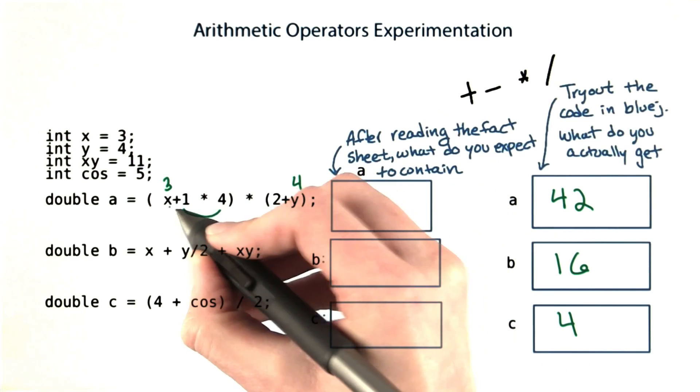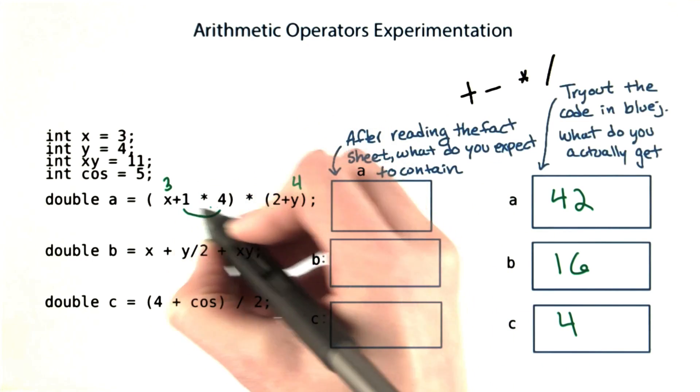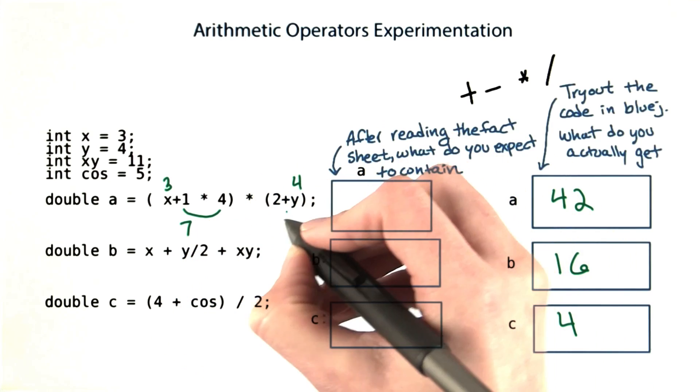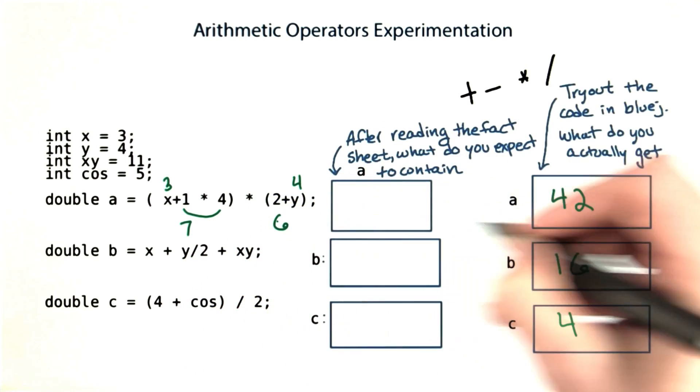Multiplication happens before addition, and then we add 4 to 3, and get 7. 2 and 4 gives us 6, and we multiply to get 42.